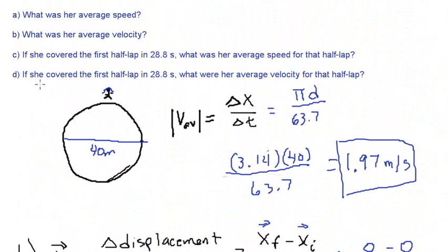The question says if the girl covered the first half lap in 28.8 seconds, what were her average velocity for that half lap? Okay, notice that questions C and D sound the same. The only difference is that question C is the average speed, and for question D, we're looking for average velocity.